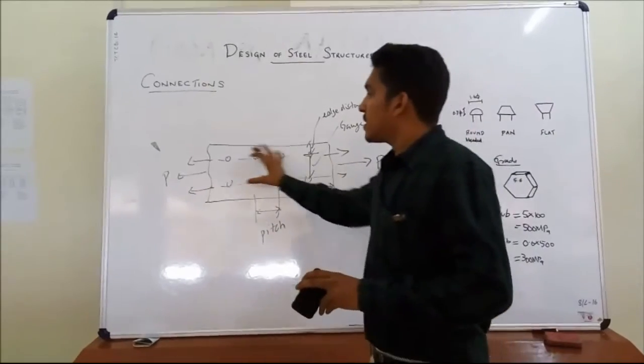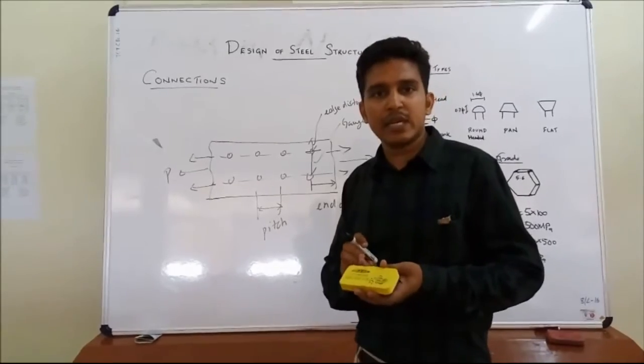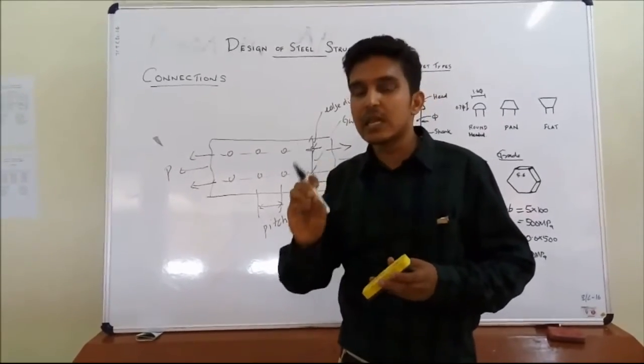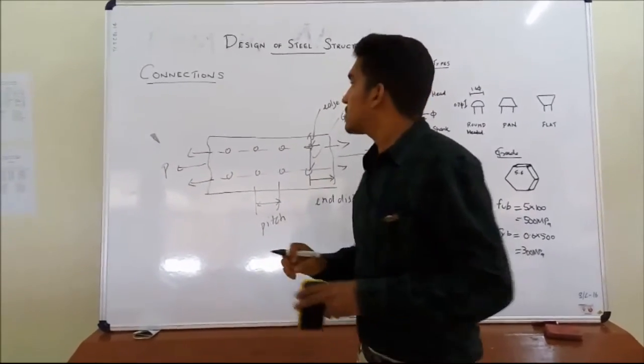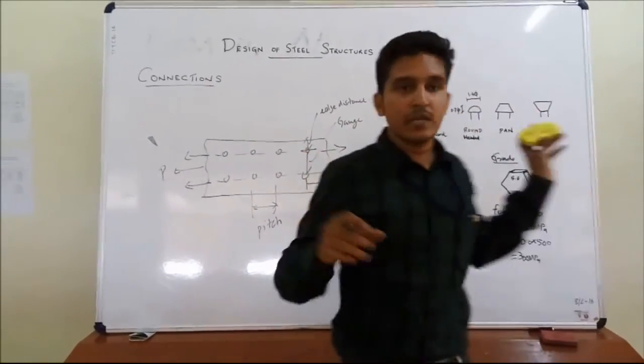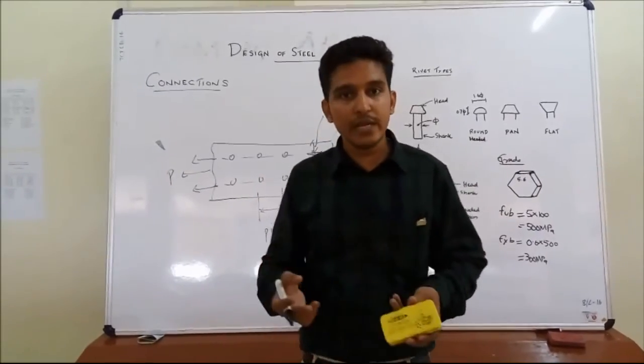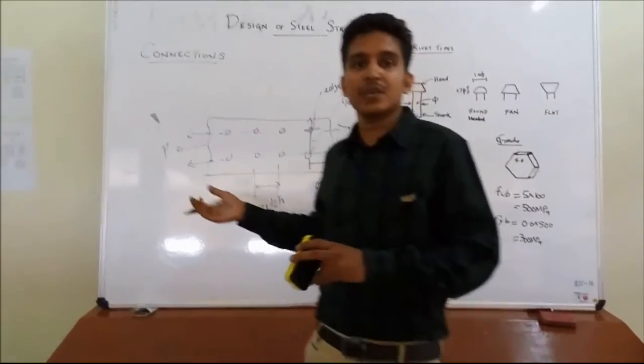That is how the bolts are arranged. There are different types of arrangement, there are staggered, diamond arrangement, different types are suggested and designed based on the requirement. This is how the connections are defined. Different types we have seen, bolts and rivets, and also different another type of connection is there, welding as well, will be taken up in a later class. Thank you.